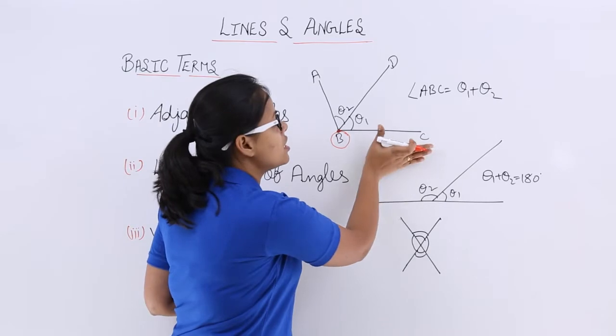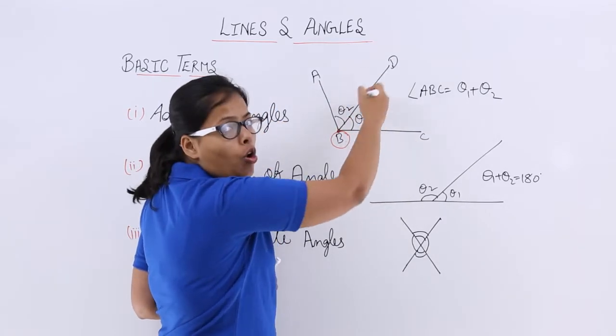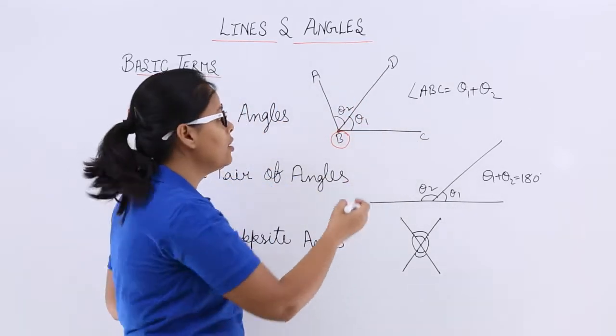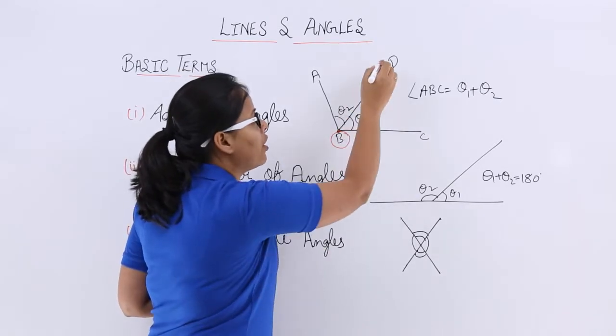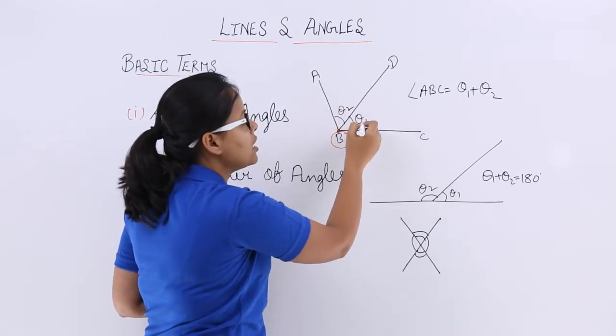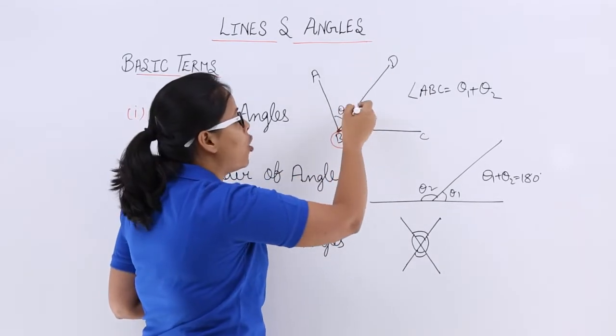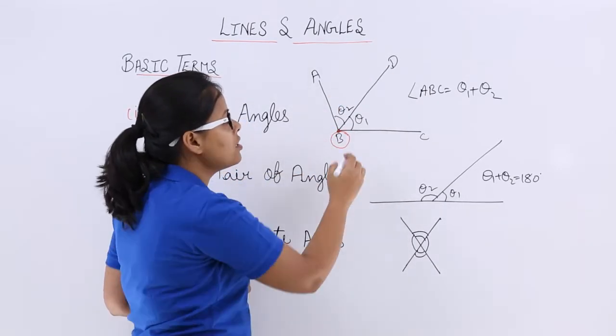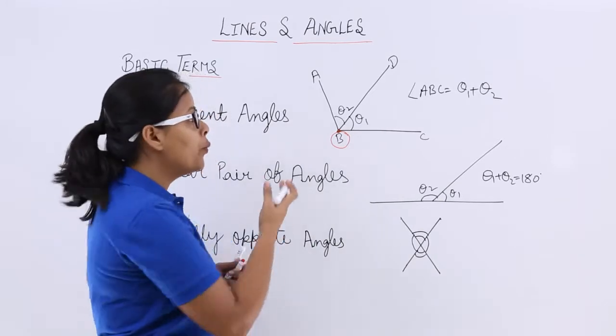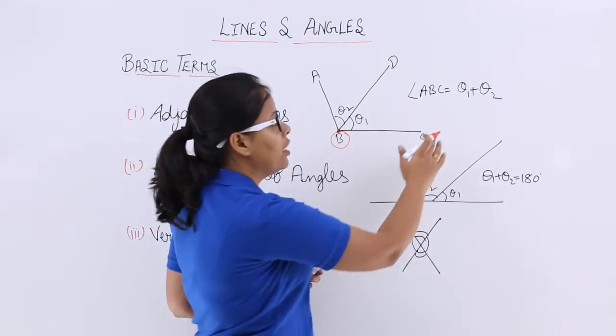And this is the non-common arms and this being the common arm which is a ray here. So angle made by this common ray with the non-common line is theta1. And again angle made by this common line with non-common arm is theta2. What you can see here that adjacent